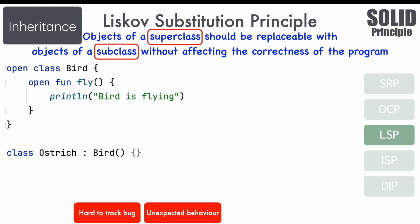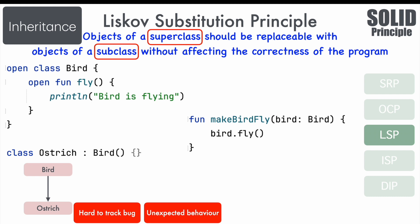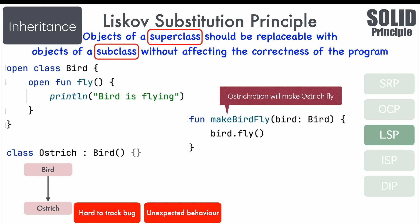Let's take another example. You have a class called Bird with a function fly, and then a class Ostrich which extends Bird. The class hierarchy is built on the logic that an ostrich is a bird — an IS-A relationship. However, if someone writes a function makeBirdFly that takes a Bird as argument and invokes bird.fly, due to the inheritance hierarchy, makeBirdFly will actually make the Ostrich fly. Ostrich can't substitute for Bird, and this is why you are violating LSP — you end up with polymorphism that has gone wrong.